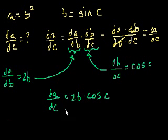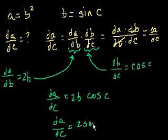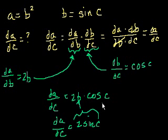So we're done. The derivative of a with respect to c equals 2b times cosine of c. And if you don't like the derivative being a function of both b and c, you can substitute for b since b is also a function of c. So the derivative of a with respect to c is 2b, but b is just sine of c — so it becomes 2 sine of c times cosine of c.